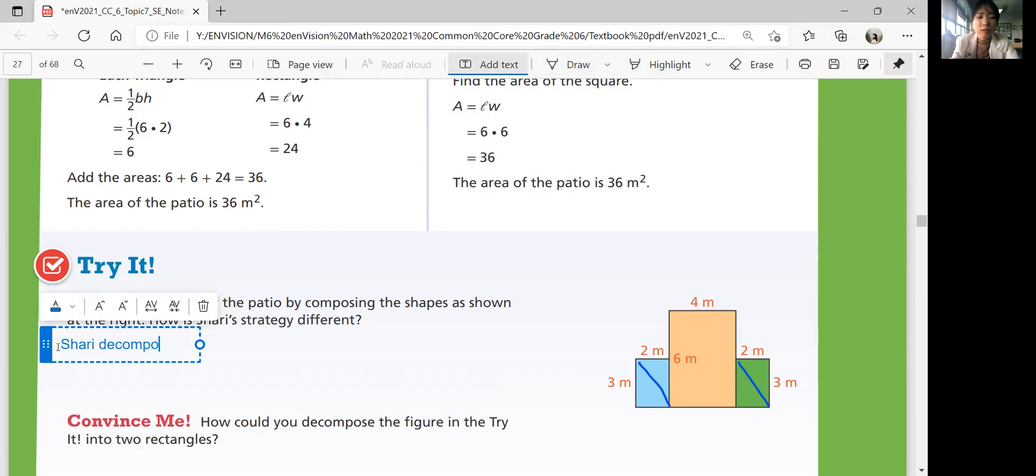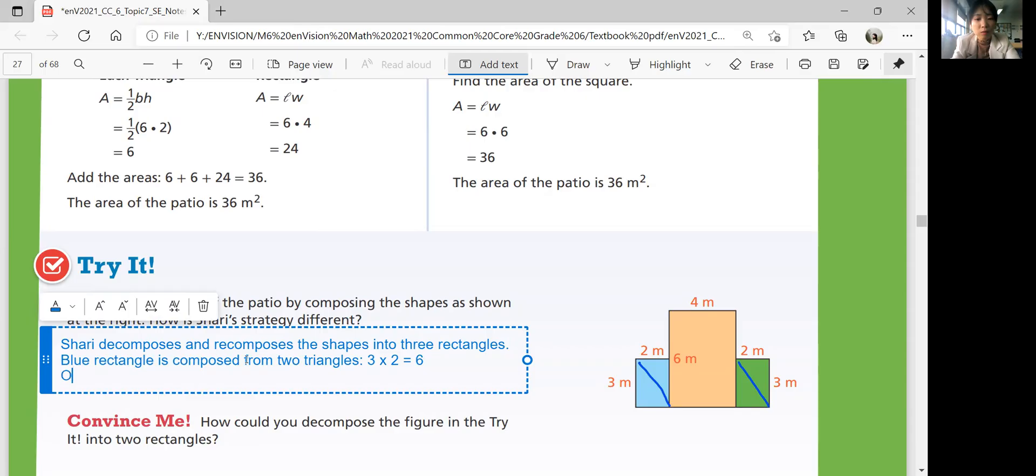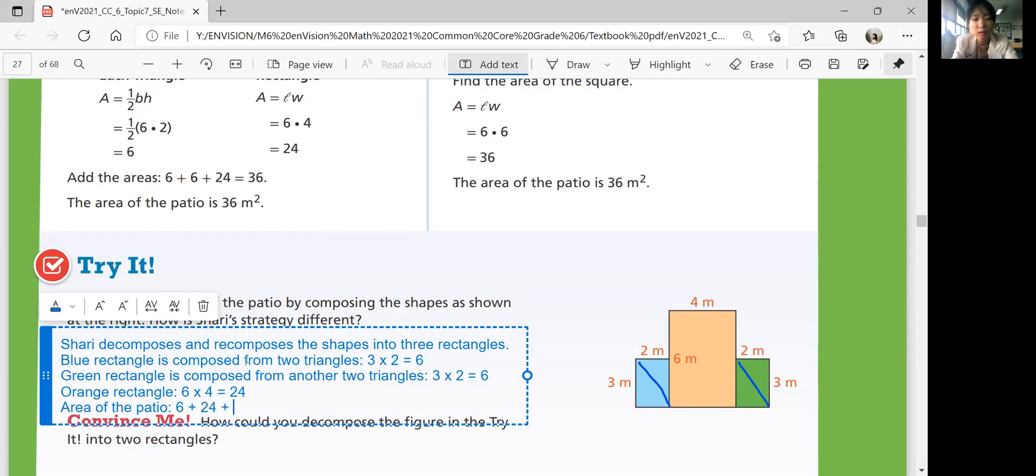Sherry decomposes and recomposes into three rectangles. The blue rectangle is composed from two triangles. So 3 times 2 is equal to 6. The orange rectangle is just the main one in the middle. So 6 times 4 is 24. So the area of the patio, 6 plus 24 plus 6, which is equal to 36 square meters.